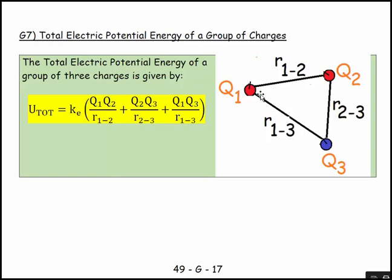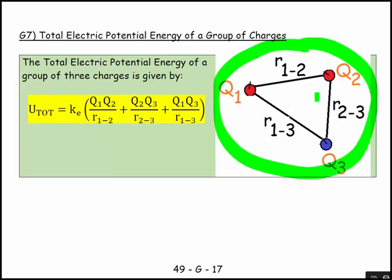It's that we have these two charges and we're introducing a third charge and we want to know the potential energy of the entire group. Whereas before there was the effect of Q3 on Q1 and the effect of Q2 on Q1, what we're taking into account here is also the effect of Q3 on Q2.